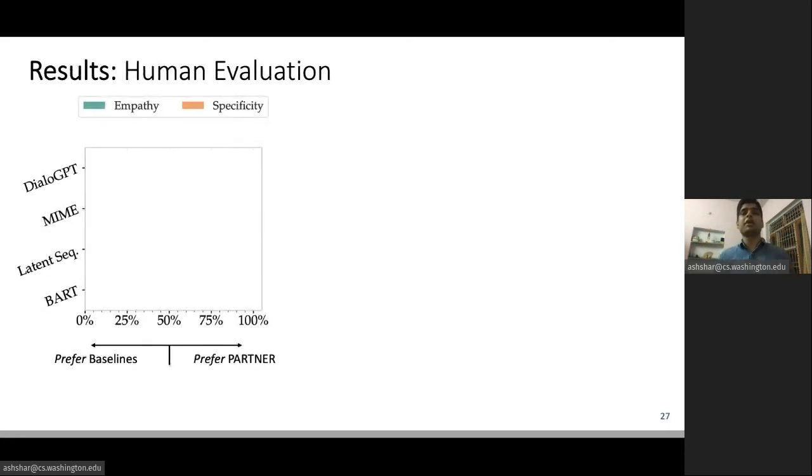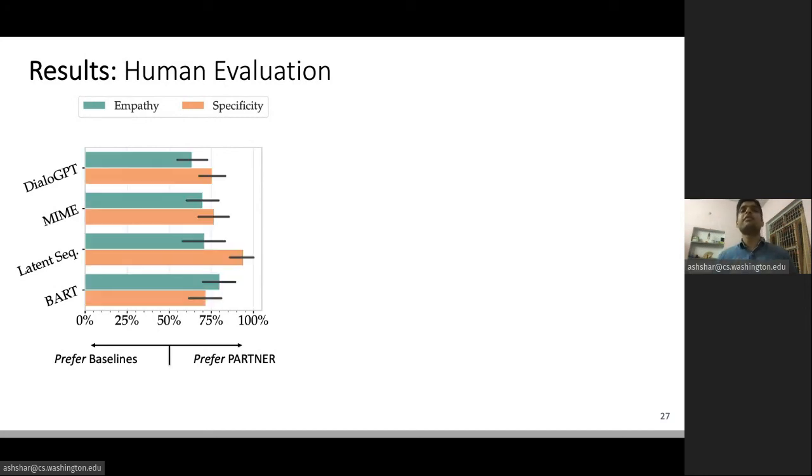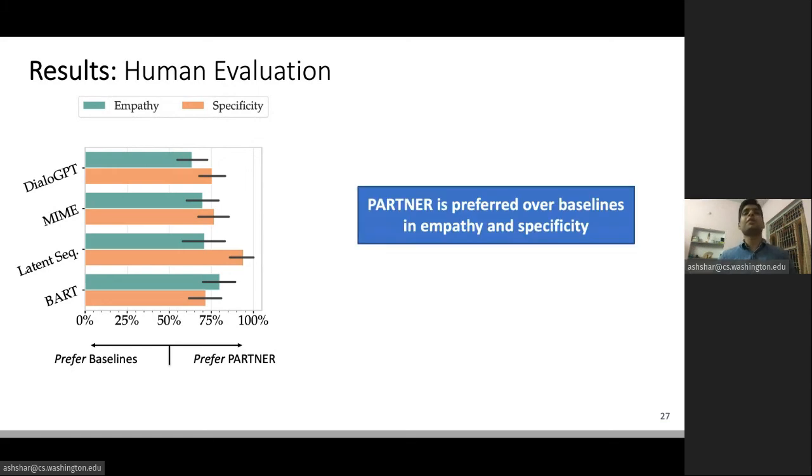This plot shows our human evaluation results for empathy and specificity. On the y-axis, you see different baselines. On the x-axis, you see preference scores. Values greater than 50% indicate preference towards our model. We find that human experts prefer PARTNER over baselines, both in terms of empathy and specificity.